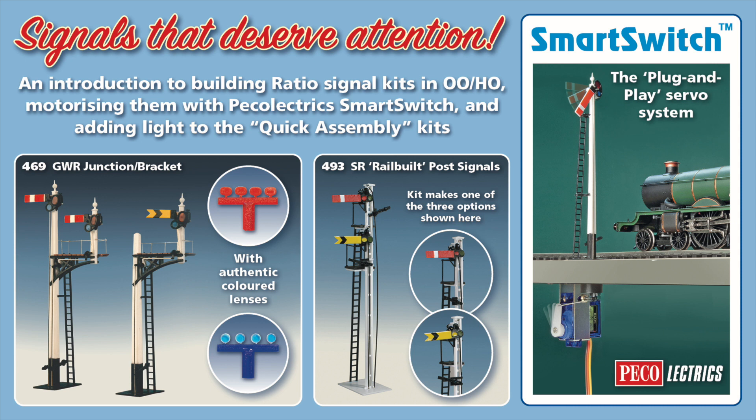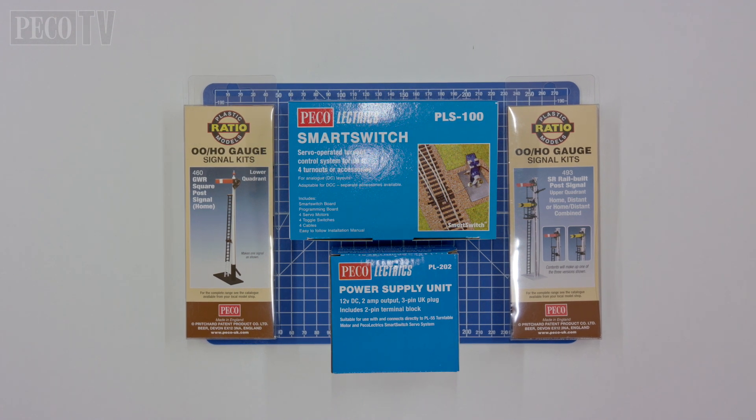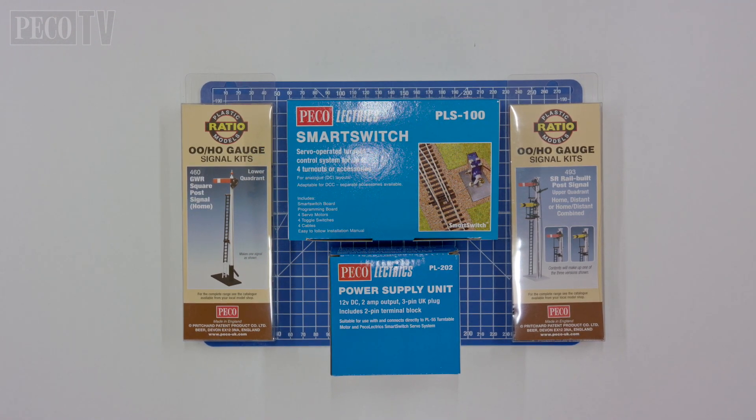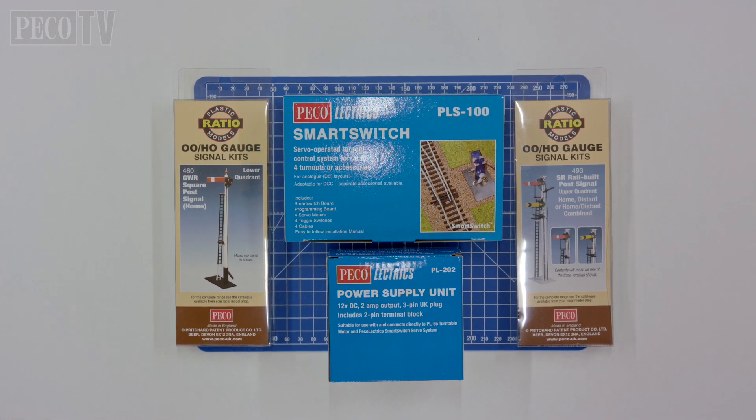Welcome to another PicoTV how-to program. This time we are looking at the construction of Ratio signal kits. In this production we will be building the Ratio 460 GWR square post home signal and will be demonstrating fitting a warm white micro LED.